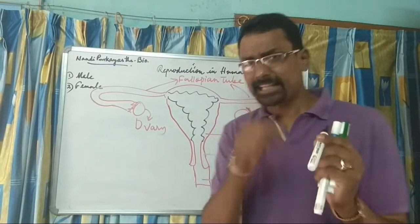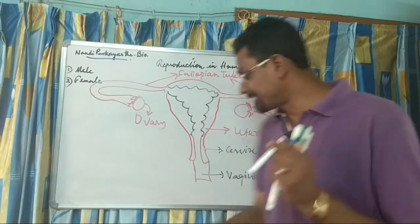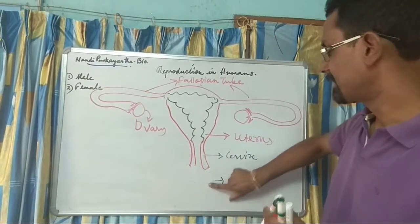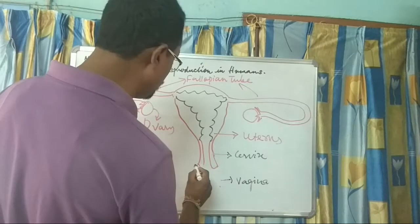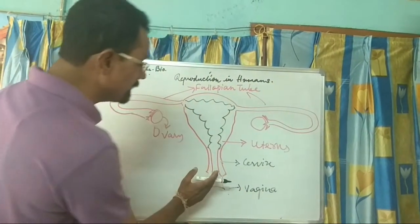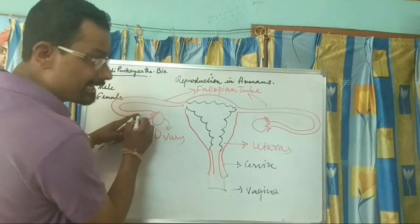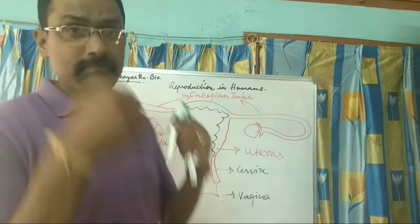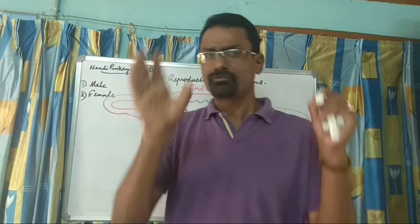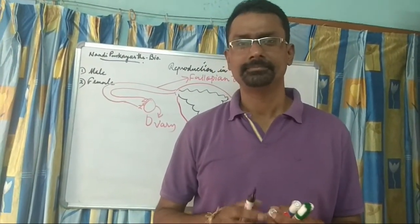When the egg enters the fallopian tube, the sperm released by the penis needs to enter the female genital tract through the vagina, travel through the female genital tract, and fertilize the egg in the fallopian tube. Then comes fertilization, then the zygote, and then the embryo. That covers both the male and female reproductive systems. Thank you.